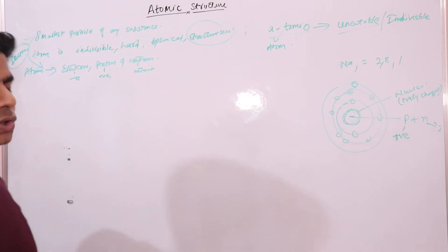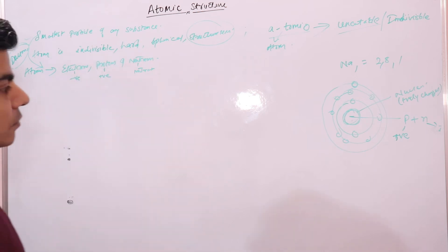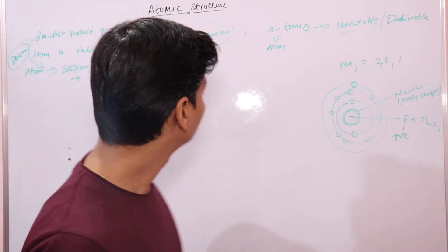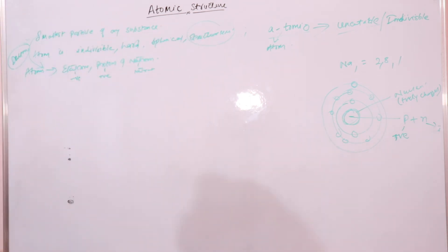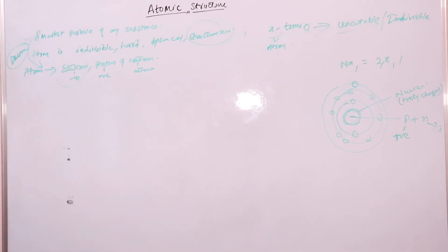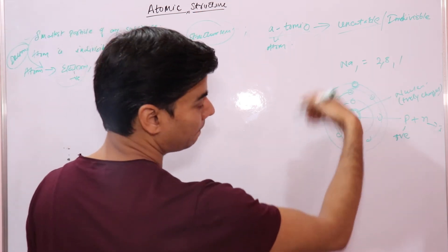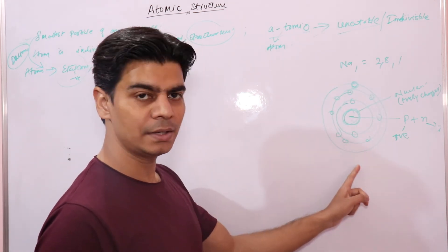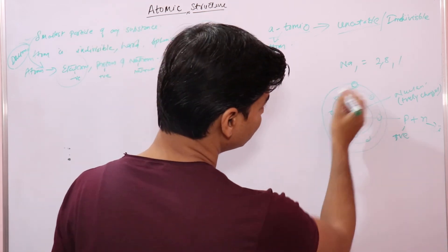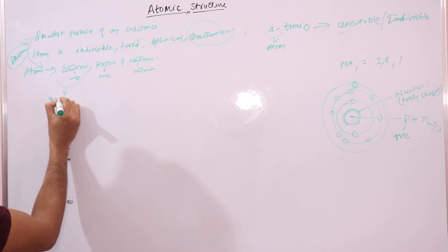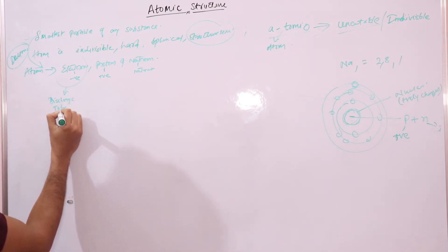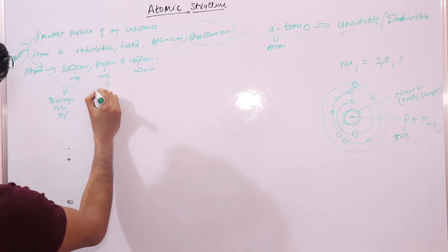The discoveries from Dalton's definition to the point where scientists discovered that atoms consist of electrons, protons, and neutrons were done using various experiments. One important experiment is the discharge tube experiment. Electrons revolve around the atom in various shells — K, L, M, N — and electrons were the first subatomic particles to be discovered using the discharge tube experiment.